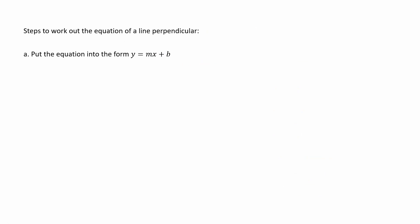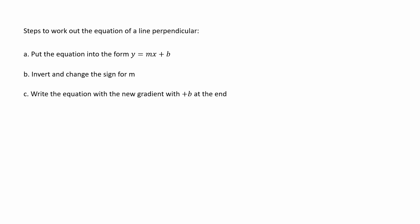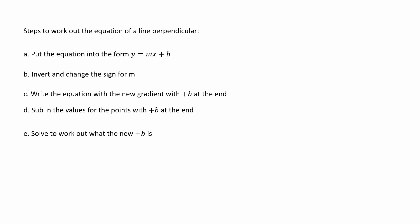Here are the steps. First, put the equation in the form y equals mx plus b if it's not already. Then invert and change the sign for m. Write the equation with the new gradient with plus b at the end. Sub in the values for the point with plus b at the end. Solve to work out what the new b is. Then write the new equation.